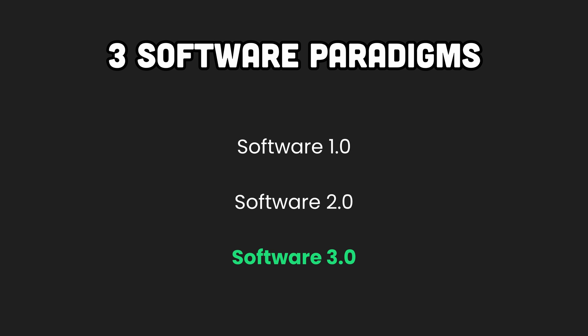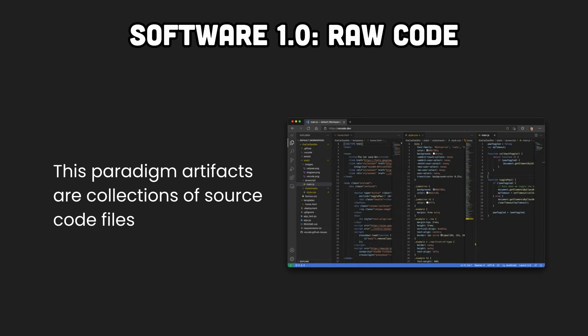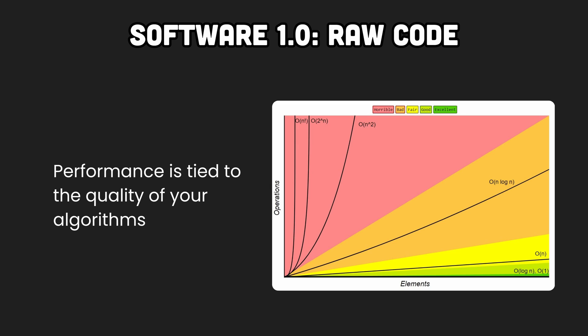Andrzej segments software into three different stages, each introducing a significant paradigm shift and characterized by its own artifacts. Software 1.0 is writing raw code and is the longest phase since coding inception, from approximately 1940 to 2012. It involves explicitly writing each step required to solve a task in a program the computer can execute. It requires domain knowledge as you are encoding human expertise into a program — for instance, writing a sorting algorithm that orders a list of numbers. These paradigm artifacts are collections of source code files, and performance is strongly determined by the quality of your algorithms.